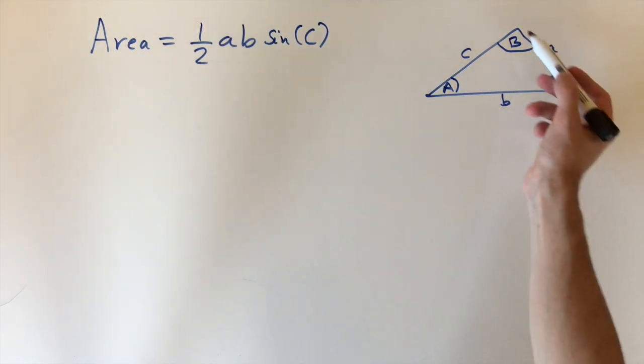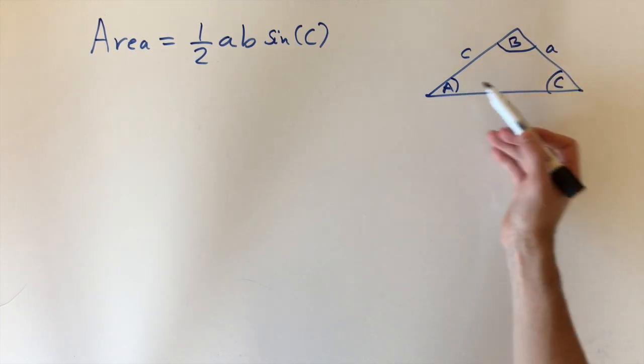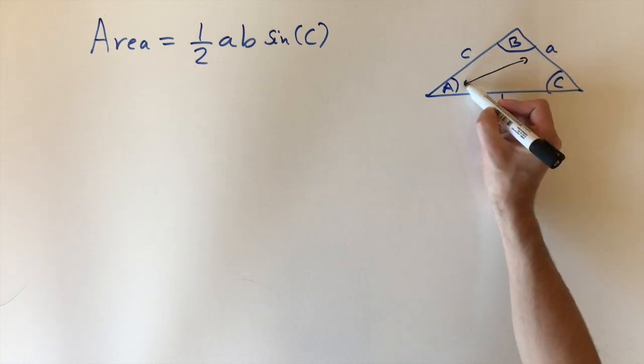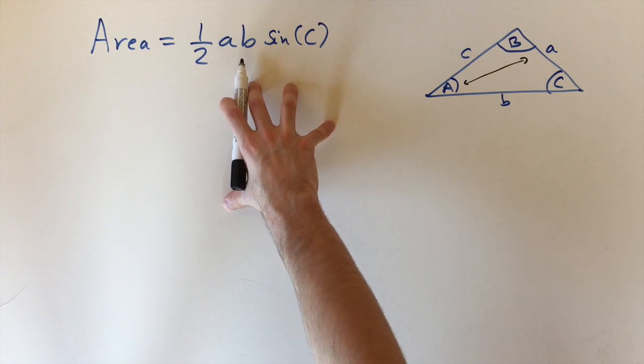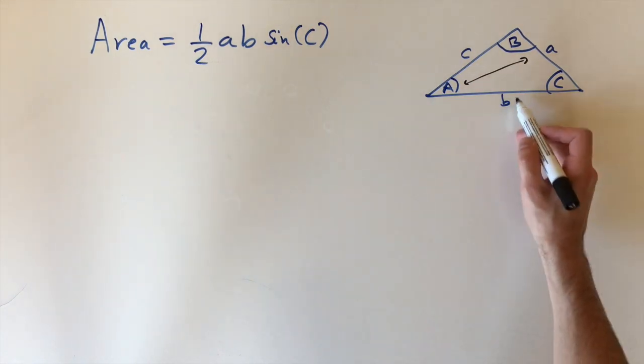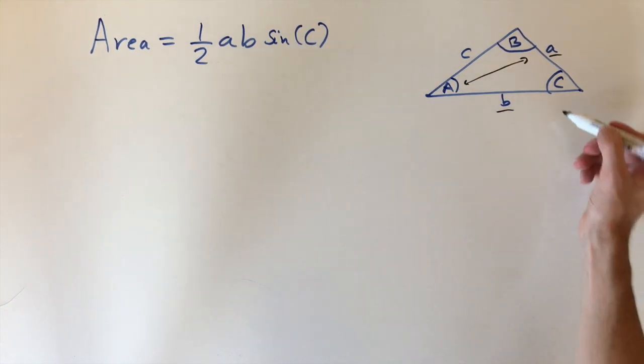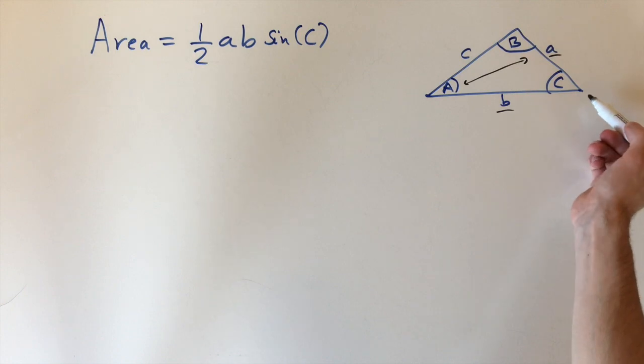The side of length little a is opposite the angle capital A, and this is the same for B and C. So we've got this opposite relationship between the angle and the length. One nice way to remember this formula is that if we have two lengths a and b, the angle we need is actually the one between these two lengths.